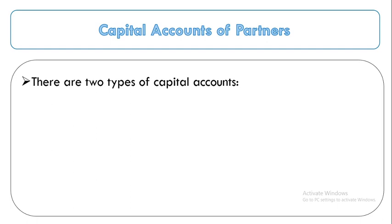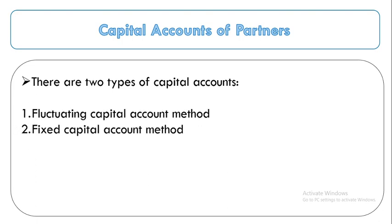There are two types of capital accounts. Before that, whenever any partner infuses capital into the business, the entry is made on the credit side of the capital account. Whenever a partner withdraws capital, the entry is made on the debit side. The two types are: first, the fluctuating capital account method, and second, the fixed capital account method.